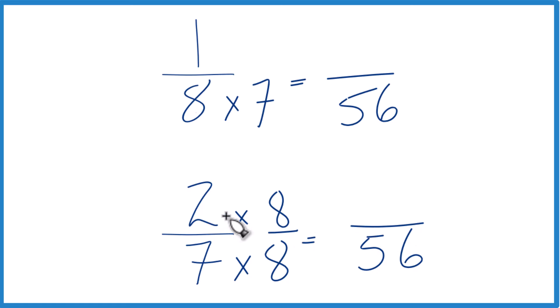2 times 8, that's 16. 16/56, that's an equivalent fraction to 2/7. They have the same value. This is just simplified.